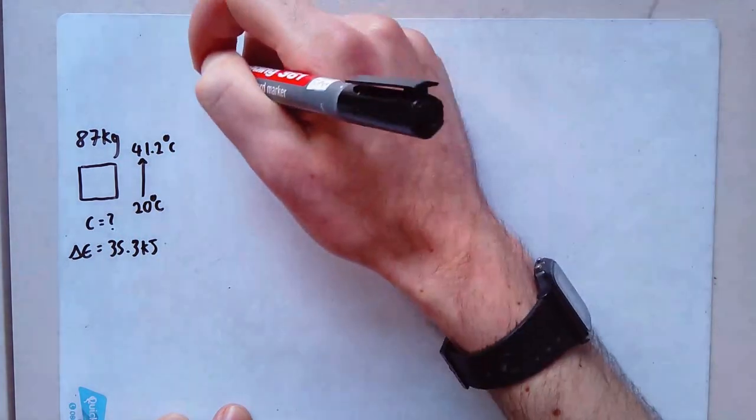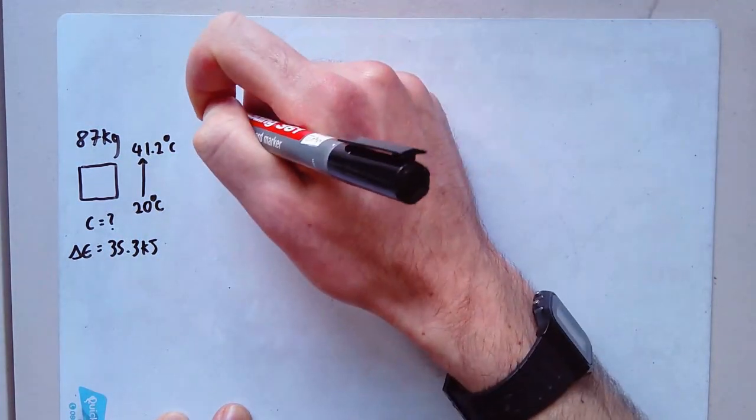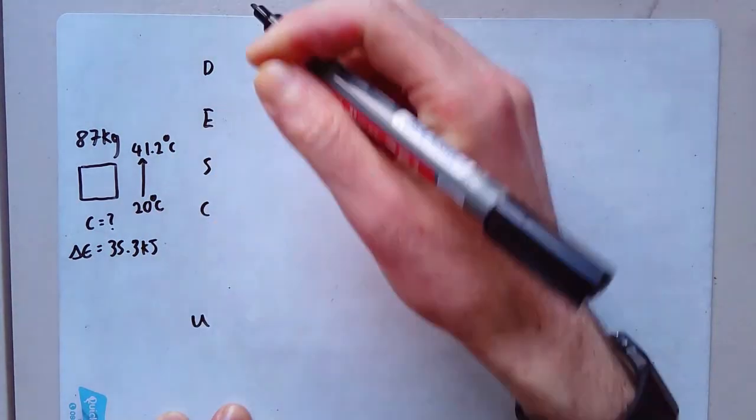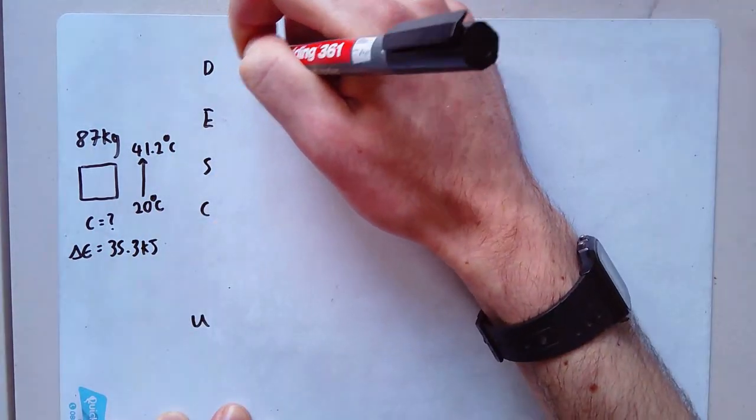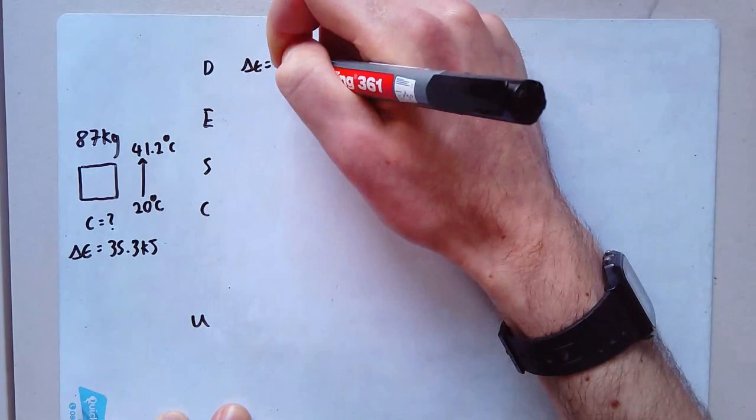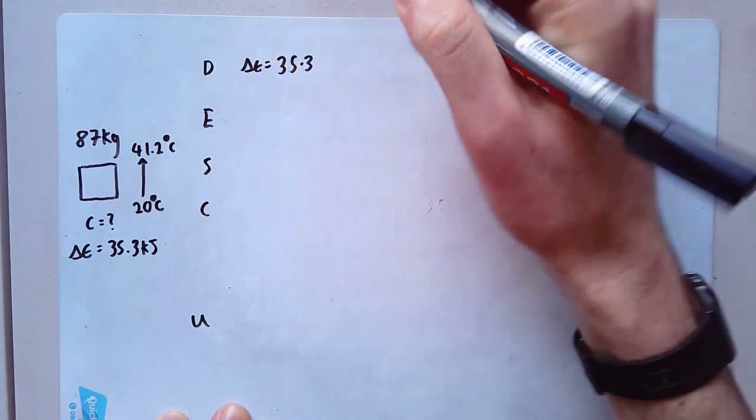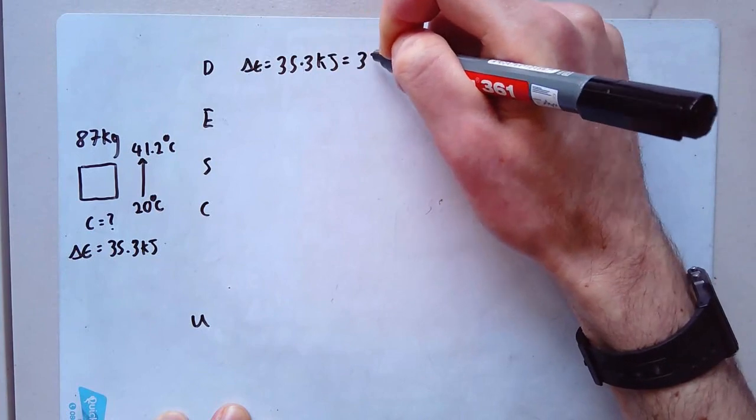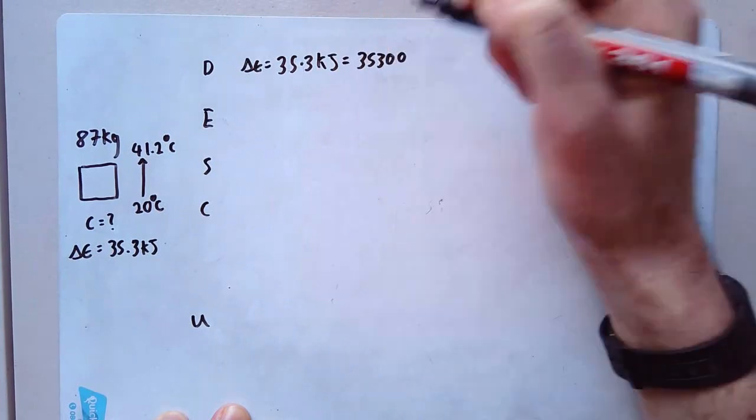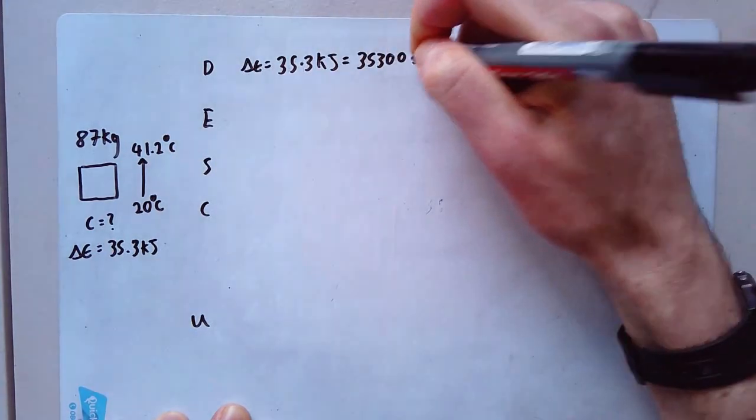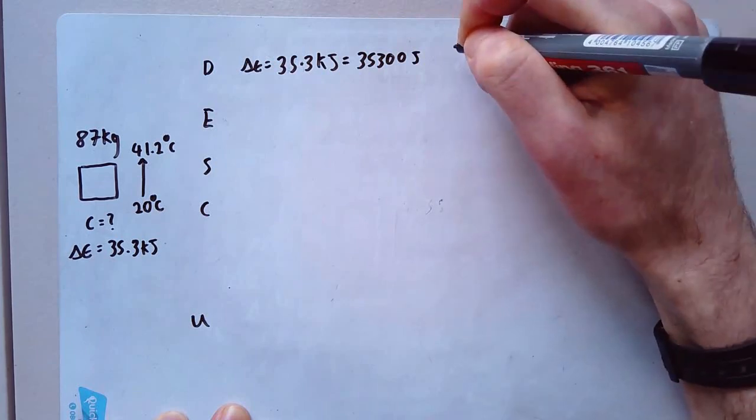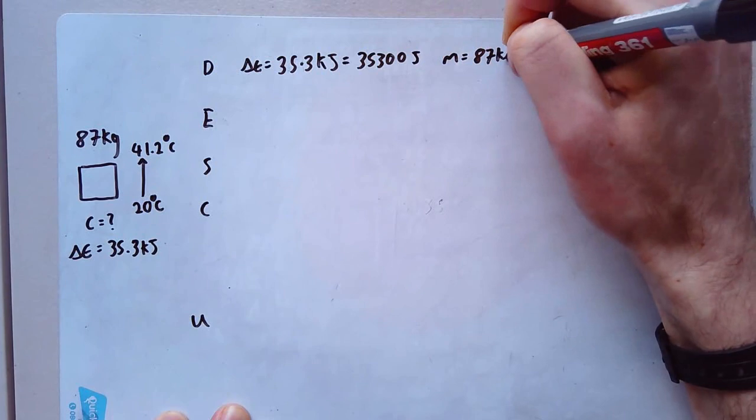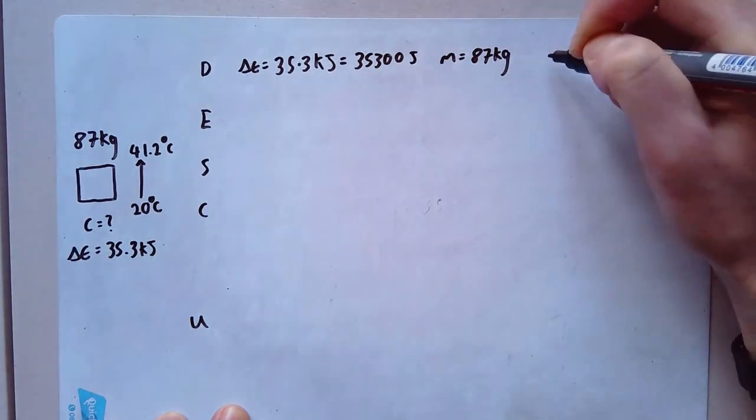D-E-S-C-U, data. Delta E equals 35.3 kilojoules, which I do not like. So I'm going to change that straight off the bat to 35,300 joules. C, I don't know. M is 87 kilograms, which is a unit that I like. My delta theta is 20 to 41.2, which is 21.2.